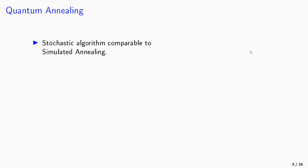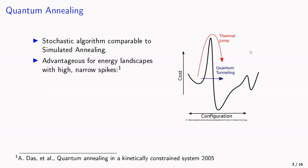From an algorithmic perspective, quantum annealing is a stochastic algorithm comparable to simulated annealing. But it is advantageous for energy landscapes with high and narrow spikes. So simulated annealing has problems to come over these spikes, because it has to accept a worse solution multiple times in a row.